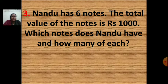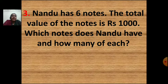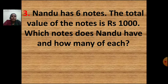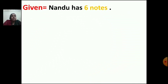Now let us do the third sum. Nandu has 6 notes. The total value of the notes is rupees 1000. Which notes does Nandu have and how many of each? Now we are going to write the statement. What is given? Nandu has 6 notes.